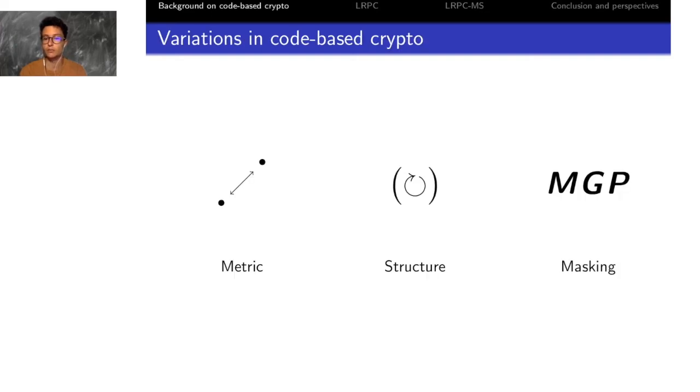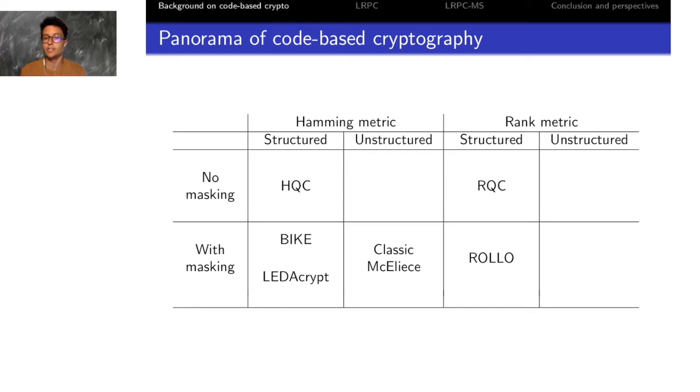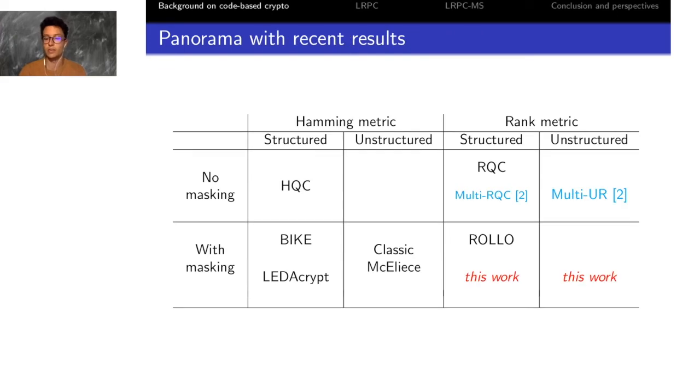We've seen in the previous slides that you have three possibilities of variations in code-based crypto, and this leads to eight possibilities. Up to recently, if we take the round two candidates for the NIST standardization post-quantum project, only five of these possibilities were fulfilled. What we add with this paper is an improvement on a rank metric structured cryptosystem with masking, and we also add the unstructured version of this scheme.